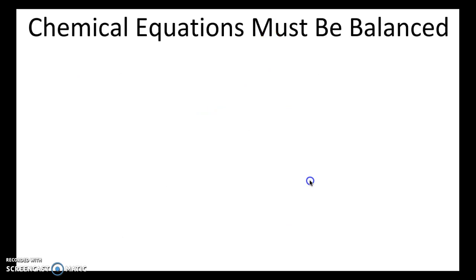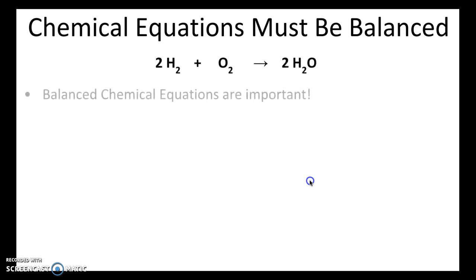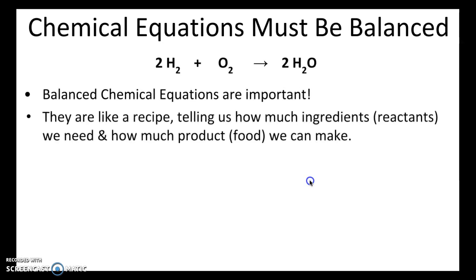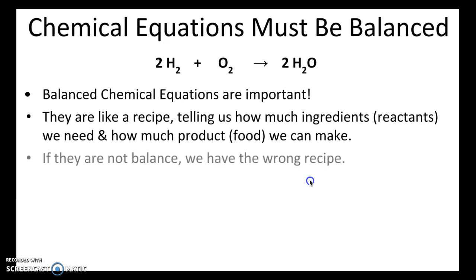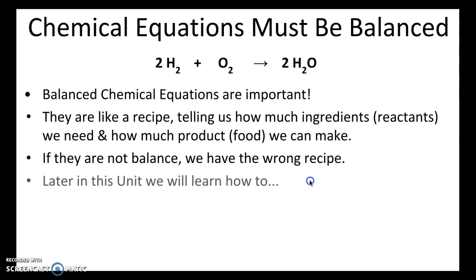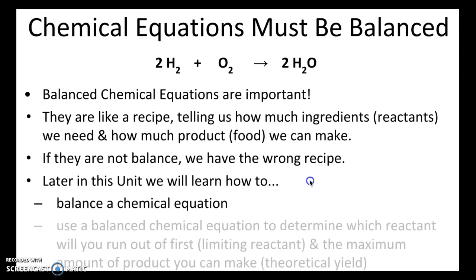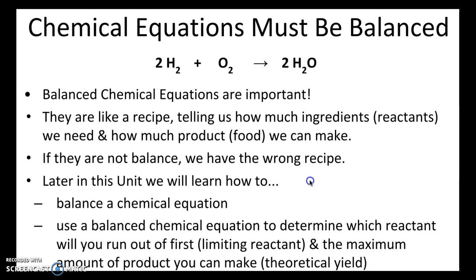It's important that chemical equations must be balanced. Balanced chemical equations are like a recipe telling you how much of the ingredients or reactants you need and how much product you can make. If they're not balanced, then we have the wrong recipe and we're not able to produce the right amount of product. Later in this unit, we're going to learn how to balance a chemical equation. You'll also learn how to use the balanced chemical equation to determine which reactant you'll run out of first — that's called your limiting reactant — and the maximum amount of product you can make.